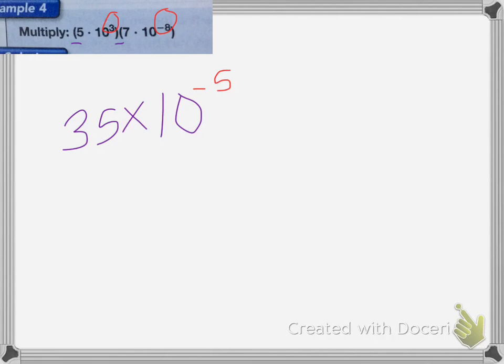Now remember, this has to be in scientific notation, so it needs to be 3.5. To move the decimal from after the 35, I have to move it to the left one spot. Or excuse me, to move this decimal here back so it is the same as the 35, I have to move it to the right one spot.